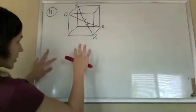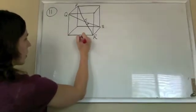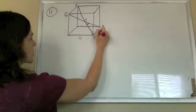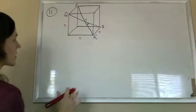All right, so this is a cube, so I'm going to label all of the sides X. So that's X, that's X, and that's X, they're all the same.